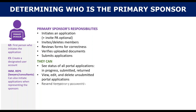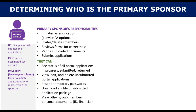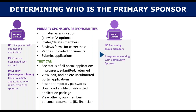The primary sponsor initiates an application and has the option to invite the principal applicant. The primary sponsor invites or deletes members, reviews forms for correctness, verifies uploaded documents, and submits applications. The primary sponsor can also see the status of all portal applications that are in progress, have been submitted, or returned. They can edit and delete unsubmitted applications, resend passwords to group members, and have the sole ability to download the submitted application package as a zip file. Keep in mind this person will have access to view other group members' IDs and financial documents uploaded into the portal. For groups of five, the primary sponsor would invite each of the other group members. For community sponsors, they could invite any co-sponsors.